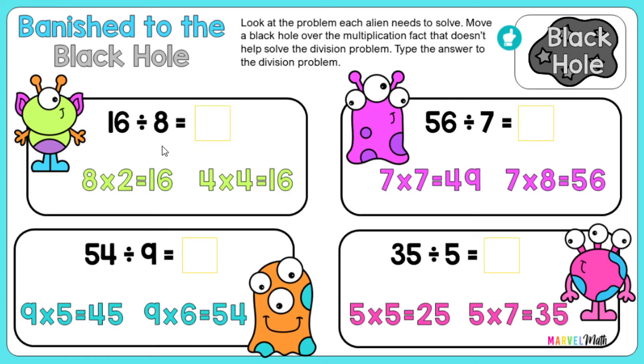And I know that I can use multiplication, 8 times something equals 16. That one would be right here, 8 times 2 equals 16. So the other one is going to get banished to the black hole, and we'll just move that right over. And now I will type in my answer. 16 divided by 8 equals 2.